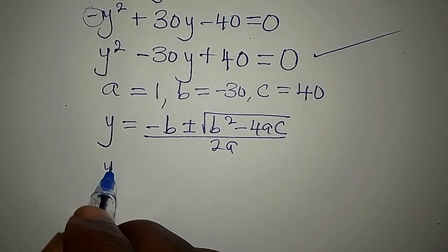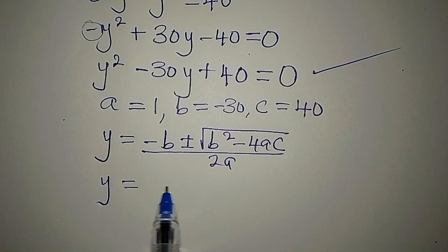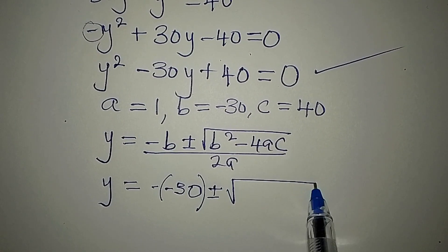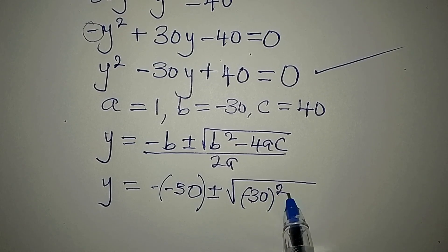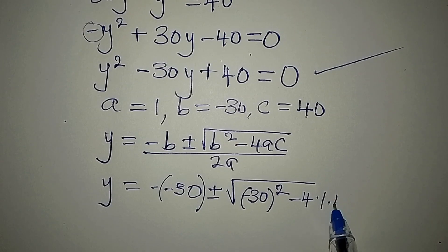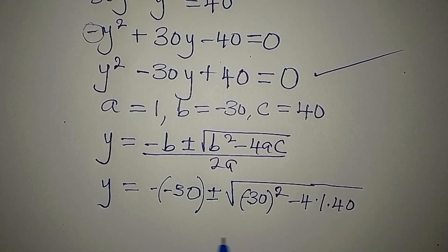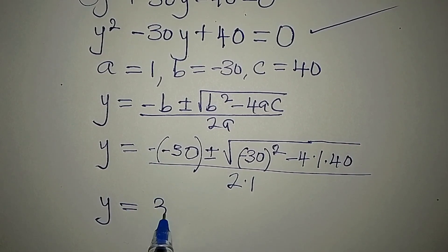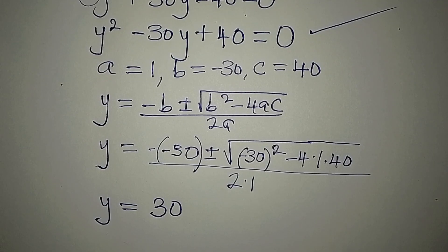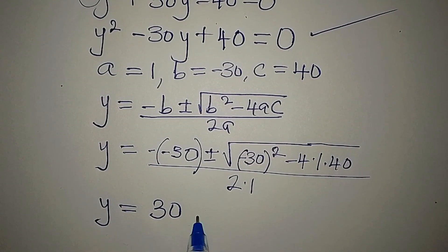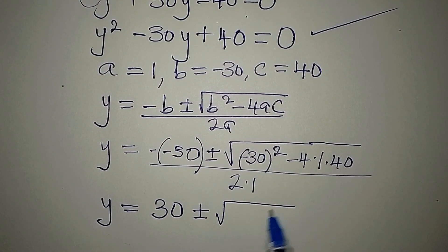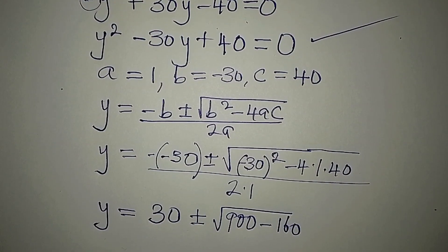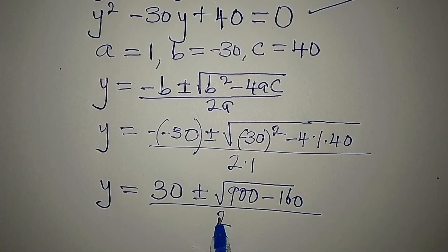So our y will now be equal to: negative of minus 30, plus or minus square root of minus 30 squared minus 4 times 1 times 40, all divided by 2 times 1. That simplifies to: y equals 30 plus or minus square root of 900 minus 160, divided by 2. Since 4 times 1 times 40 is 160, and 2 times 1 is 2.